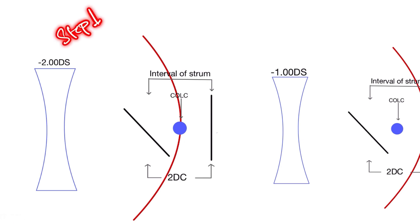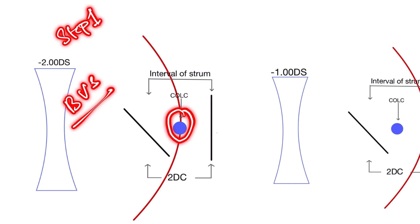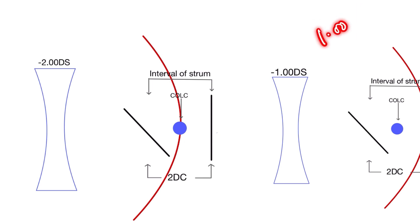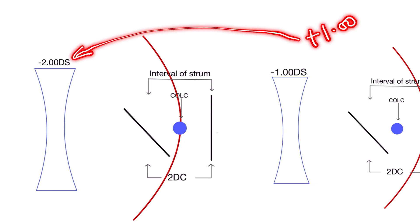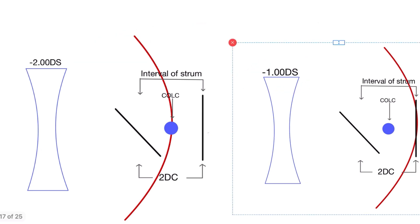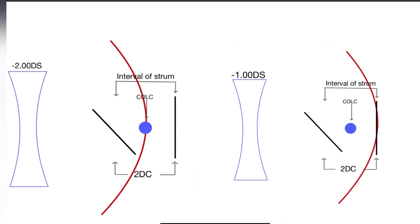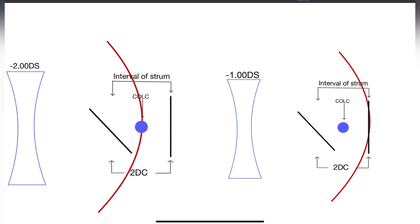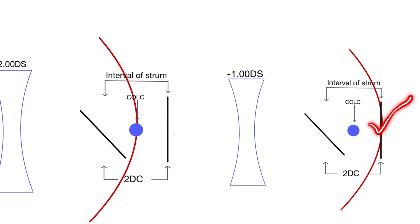In step 1, by using the best vision sphere, you are coinciding the circle of least confusion on the retina — that is why the sphere lens gives maximum visual acuity offered by any spherical lens. In step 2, the patient reading 6/18 means uncorrected astigmatism is around 2 diopters, so half of that is 1 diopter. Adding +1 to the best vision sphere reduces the net sphere by 1 diopter. This moves the circle of least confusion in front of the retina and brings the posterior focal point onto the retina, so the patient sees one line clearly compared to the others.